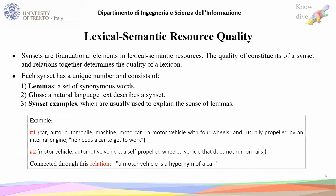This is in general about lexical semantics and lexical semantic resources. The quality of lexical semantic resources depends on the contents of the lexical semantic resource — specifically, the sense-sets and the relations between sense-sets. A sense-set is a set of synonyms and it consists of three parts. The first part is the lemmas, which is a set of synonym words. The second part is the gloss, which is a natural text that describes the sense-set. The third part is the sense-set examples, which are used to explain and clarify the sense of the lemmas.